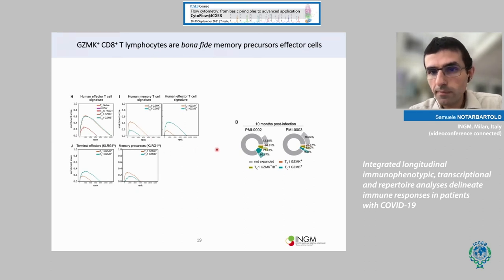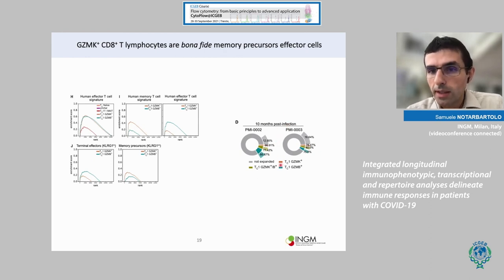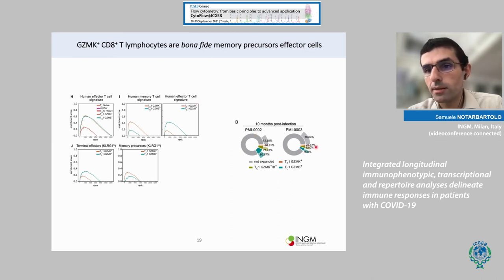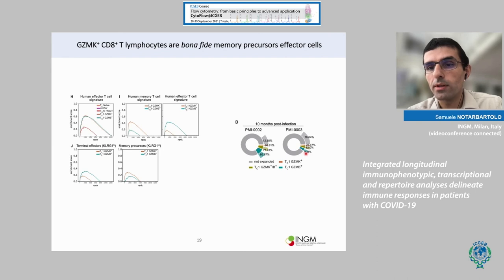To further support this hypothesis, we looked in patients to analyze the presence of these clones 10 months after SARS-CoV-2 infection was resolved. The clones coming from the granzyme K-producing population, depicted in brown and green, were maintained 10 months post-infection at a higher frequency compared to clones coming from the granzyme B-producing population.